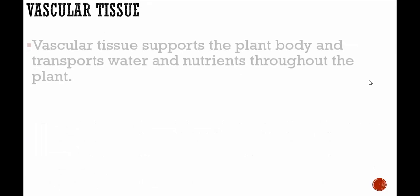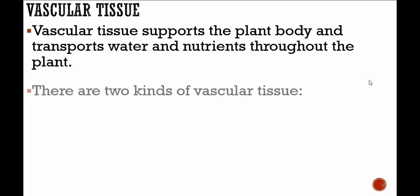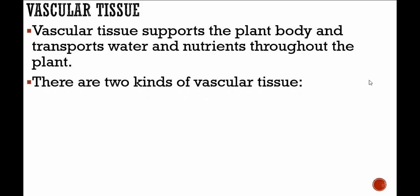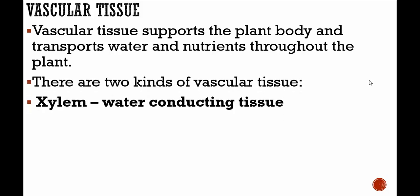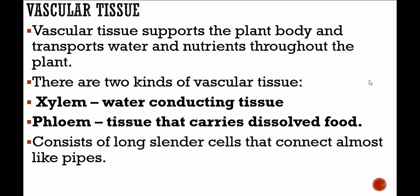Vascular tissue supports the plant body and transports water and nutrients throughout the plant, similar to a bloodstream in humans. There are two kinds of vascular tissue: xylem tissue, which is water-conducting tissue, and phloem tissue, which carries dissolved food. It consists of long, slender cells that connect almost like pipes. Xylem and phloem are two specialized terms you need to know.